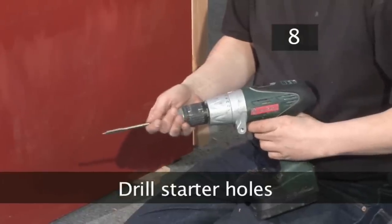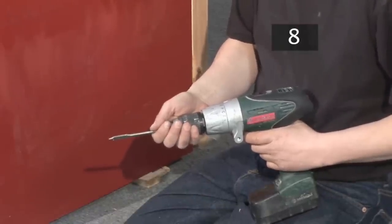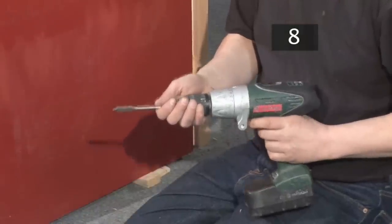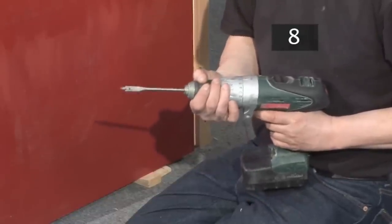Step 8. Drill starter holes. Next, you'll have to drill four starter holes to help you cut out the shape of the inner flap with the jigsaw. Select a large flat wood cutting bit that is about 13mm wide and attach it to your drill.